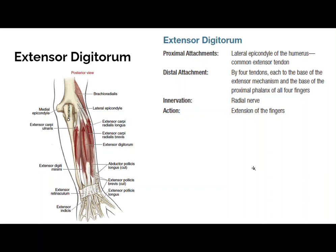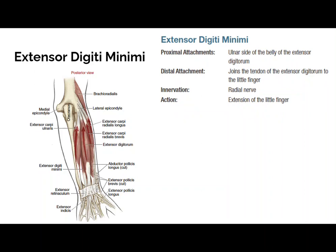Extensor digitorum comes off the lateral epicondyle and goes to the distal phalanges of the digits — there is only one extensor digitorum muscle. The middle layer is extensor digiti minimi, also seen as extensor digiti quinti, extending the pinky finger. It's radial nerve innervation, and since it's posterior to the wrist joint, it can help with wrist extension.